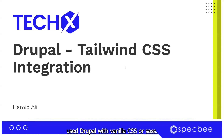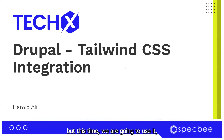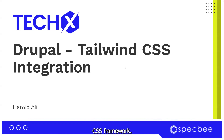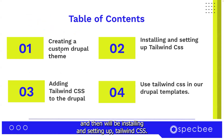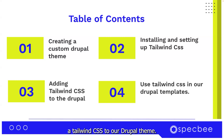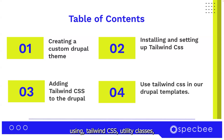Most of the time we have used Drupal with Vanilla CSS or Sass, but this time we are going to use it with Tailwind CSS, which is a utility-first CSS framework. First, we'll begin with creating our custom Drupal theme, then we'll be installing and setting up Tailwind CSS. After this, we'll be adding Tailwind CSS to our Drupal theme, and finally we'll be using Tailwind CSS utility classes in our templates to see how it works.